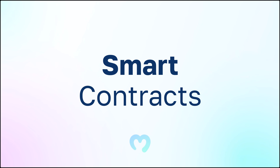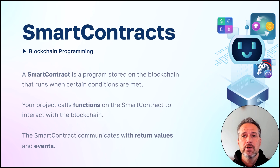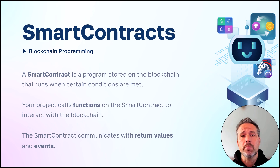Now let's talk about smart contracts. A smart contract is a program that's running on the blockchain. From Unity, we can call functions on that to perform different operations. We can also get return values back from those functions, as well as hear from events broadcast by the contract itself.